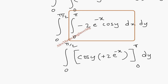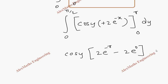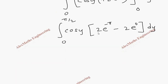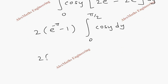Keeping the constant cos(y) and substituting the limits: at x = π we get 2e^(−π), and at the lower limit x = 0 we get e^0 = 1, so the expression becomes 2(e^(−π) − 1). The integral from 0 to π/2 of cos(y) dy gives sin(y) evaluated from 0 to π/2. We take out the constant: 2(e^(−π) − 1) times the integral of cos(y).